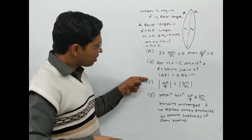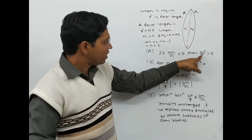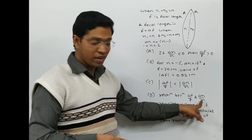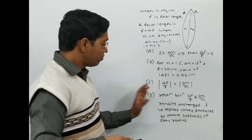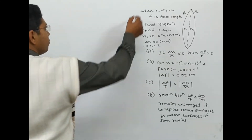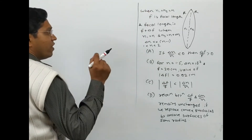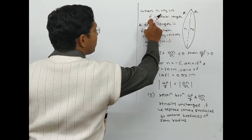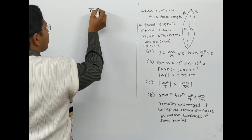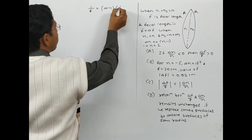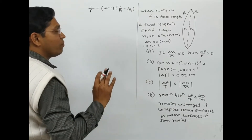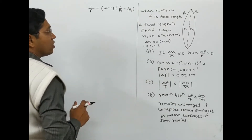Looking at the options carefully, in most cases we need to find delta f by f. So we'll work toward finding delta f by f. We start with the general lensmaker's formula: 1/f = (mu - 1)(1/r1 - 1/r2). For the symmetric lens with refractive index n, this gives 1/f = (n - 1)(2/r), using r1 = r and r2 = -r.